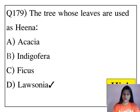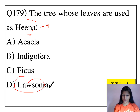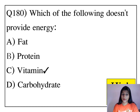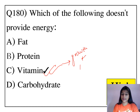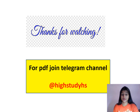The tree whose leaves are used as henna — henna is basically used for mehndi — is from Lawsonia. Which of the following doesn't provide energy? The answer is vitamins. Vitamins are needed for the growth and development of the organs of your body. With this, we complete our lecture. You can download this PDF on the Telegram channel or in the description below.